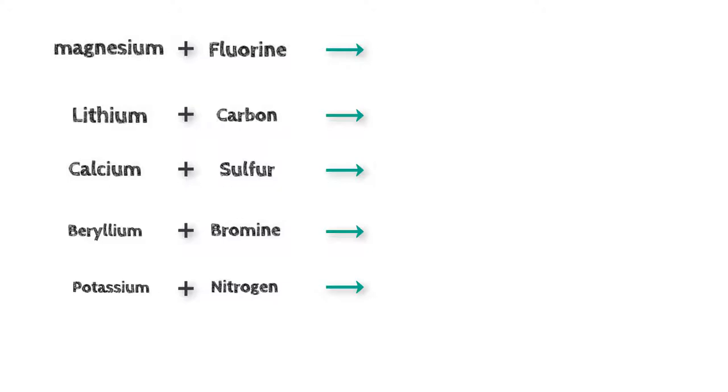In the first one, magnesium plus fluorine means magnesium and fluorine are reacting to produce magnesium fluoride. Remember the second named element's ending changes to I-D-E or I-D. Lithium reacts with carbon and produces lithium carbide.